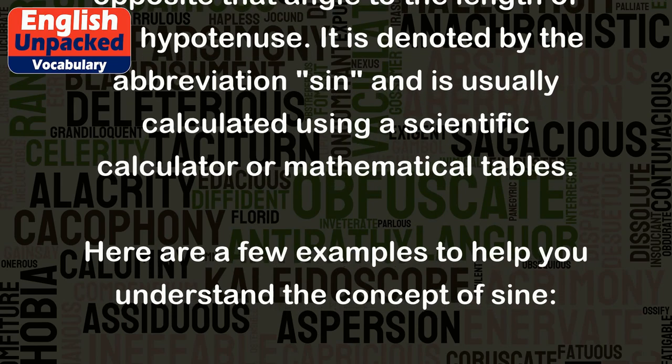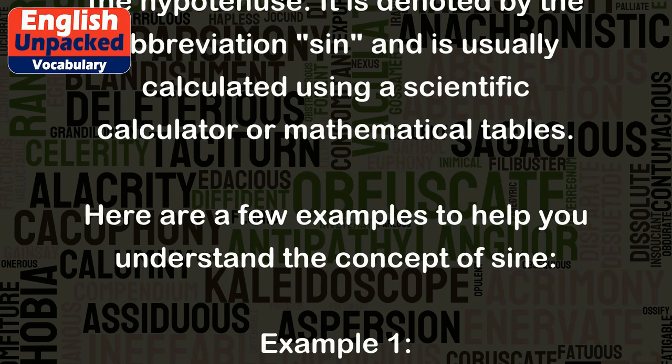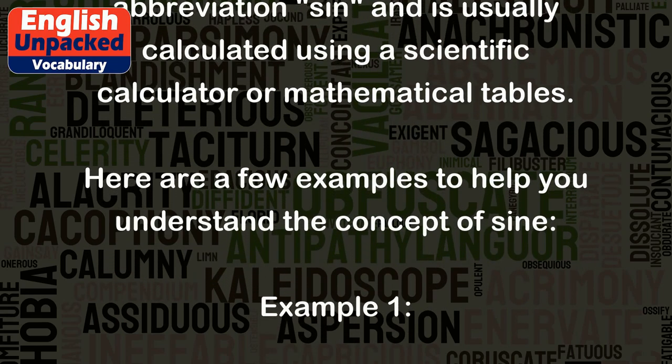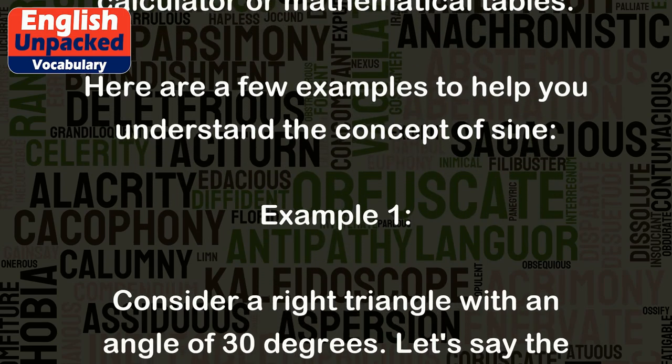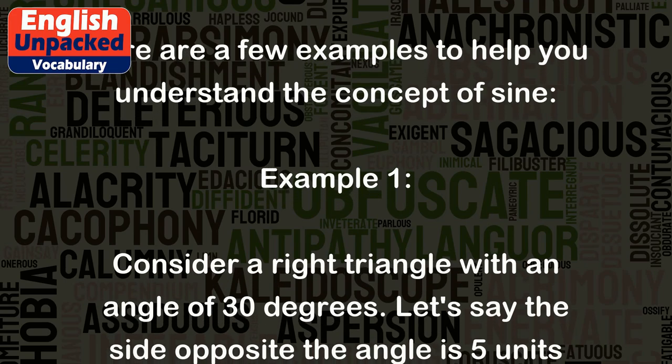Example 1: Consider a right triangle with an angle of 30 degrees. Let's say the side opposite the angle is 5 units long, and the hypotenuse is 10 units long.